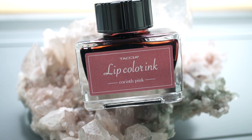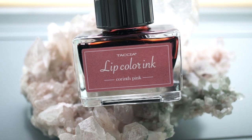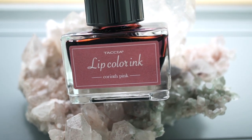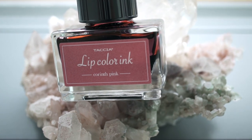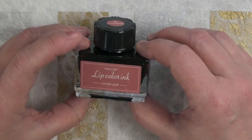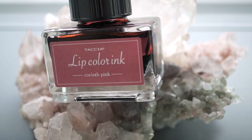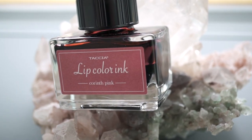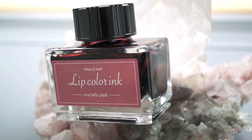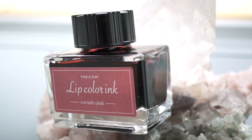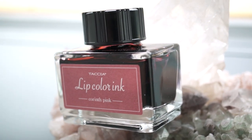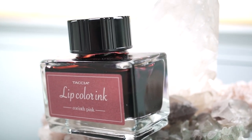This past summer, Tassia came out with their lip color ink line of only pink colored inks. The short squat bottle was a fresh design. It kind of reminds me of the J. Herbin bottles, but a little more sleek. And the whole labeling kept in line with their makeup theme, which made this a fun bottle.